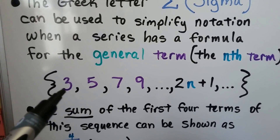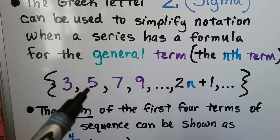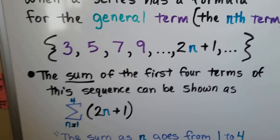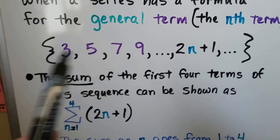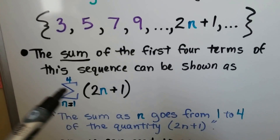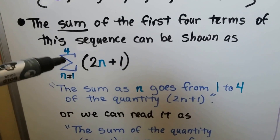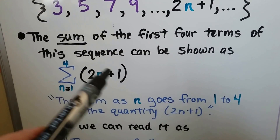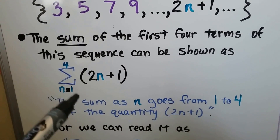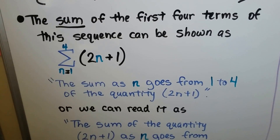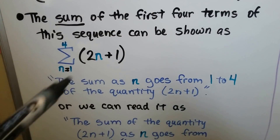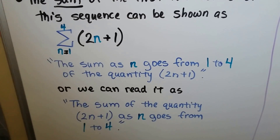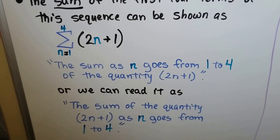Here we have a sequence: 3, 5, 7, 9, and we find our nth term with 2n plus 1. The sum of the first four terms of this sequence can be shown using sigma notation. We use our sigma, we put a 4 up here because we're doing the first four terms, and this is the nth term. We're going from 1 to 4 — the sum as n goes from 1 to 4 of the quantity 2n plus 1. That's how we would read it.